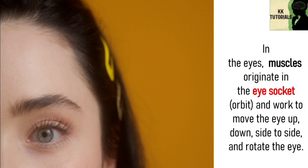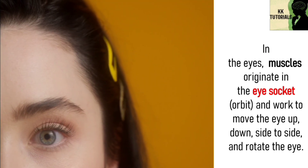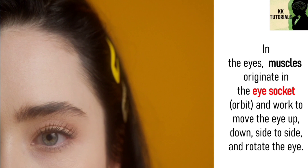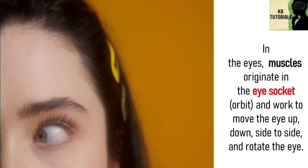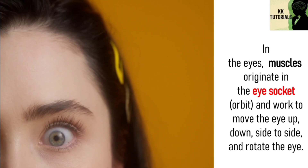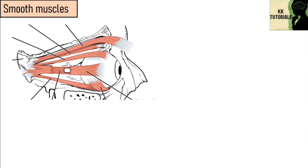In the eyes, the ciliary muscle, a type of smooth muscle, dilates and contracts the iris and alters the shape of the lens. These muscles originate in the eye socket and work to move the eye up, down, side to side, and rotate the eye. There are 6 muscles that control all of the movement of the eye.